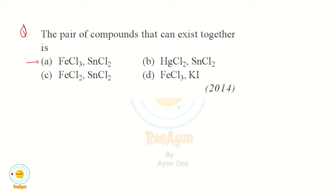In Option A, FeCl₃ has iron in its highest oxidation state (+3), which can go to its lowest oxidation state (+2), meaning reduction occurs. In SnCl₂, tin is in its lowest oxidation state (+2) and can go to its highest oxidation state (+4), meaning oxidation occurs. Since FeCl₃ undergoes reduction and SnCl₂ undergoes oxidation, they react with each other and cannot exist together.